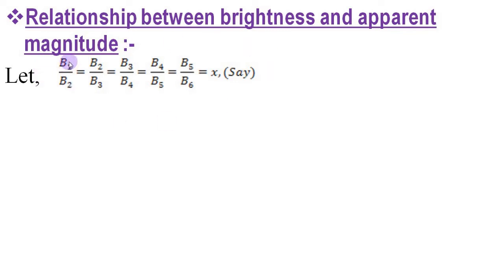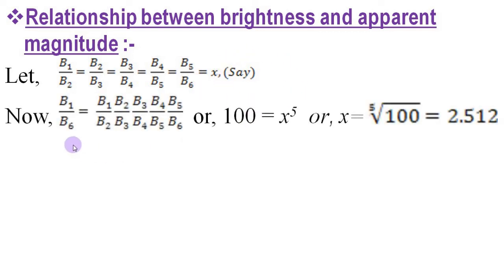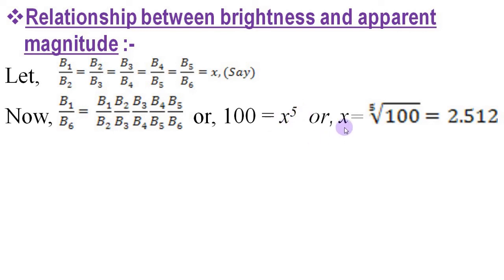We can write b₁/b₂ = b₂/b₃ = b₃/b₄ = b₄/b₅ = b₅/b₆, all equal to some quantity x. Now, if we write b₁/b₆, it can be written as (b₁/b₂) × (b₂/b₃) × (b₃/b₄) × (b₄/b₅) × (b₅/b₆). According to Herschel, b₁/b₆ = 100, and all multiplied terms individually equal x, so the right-hand side equals x⁵. From this we calculate x as the fifth root of 100, which equals 2.512.